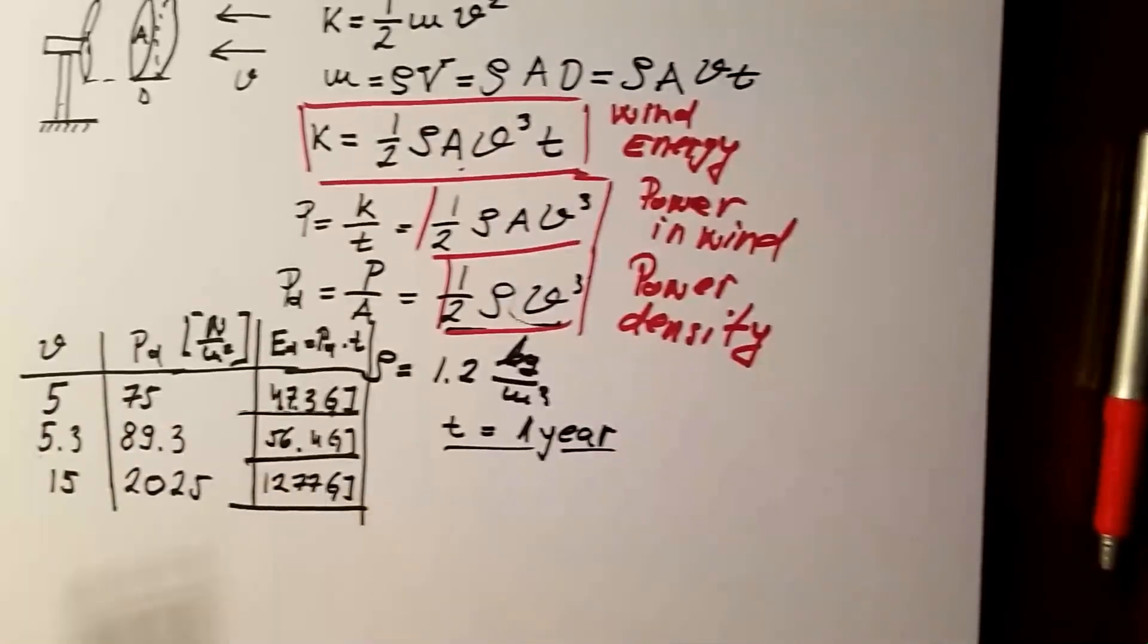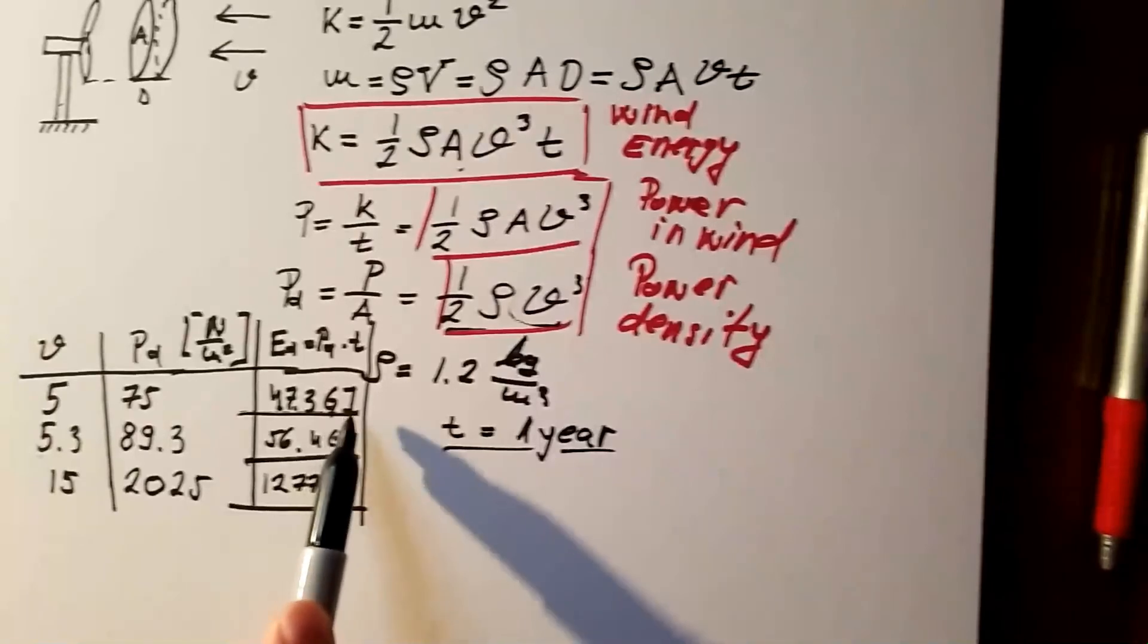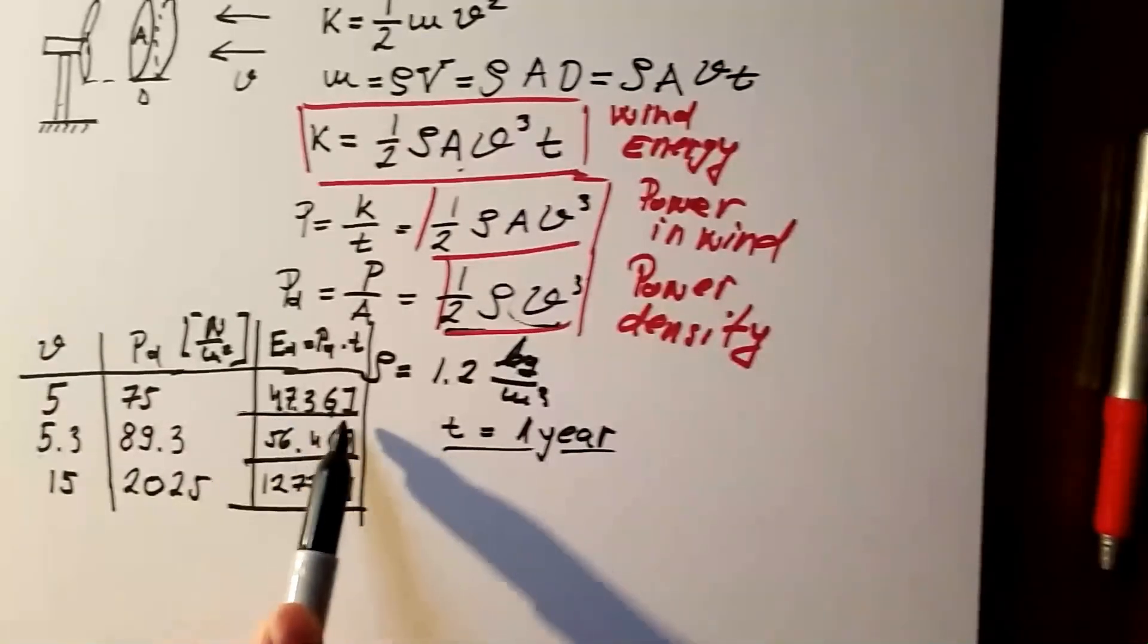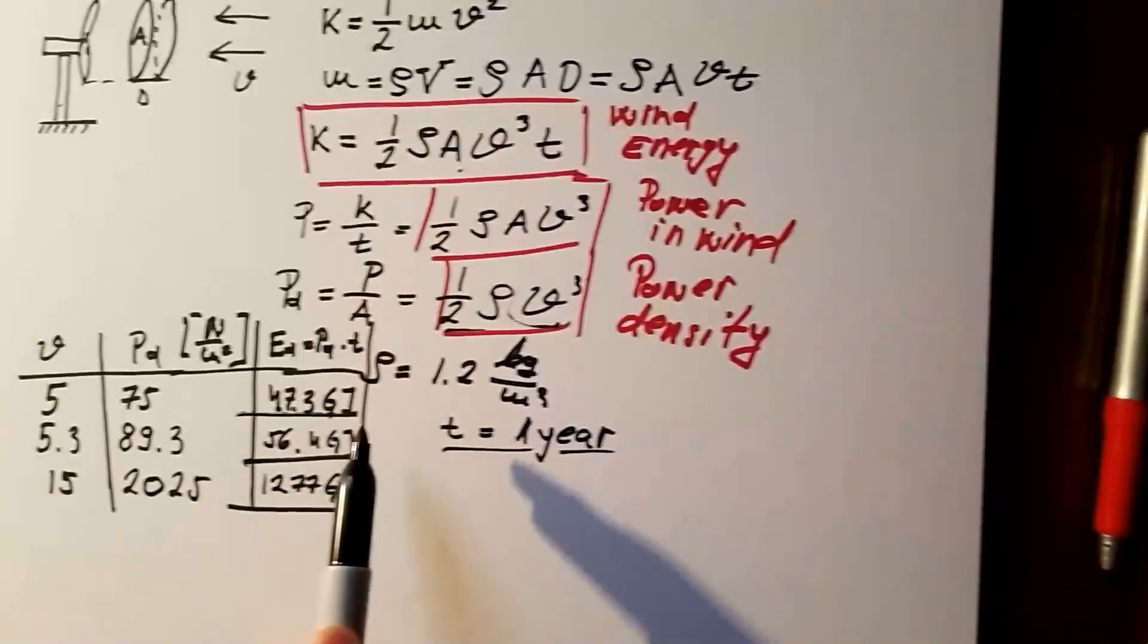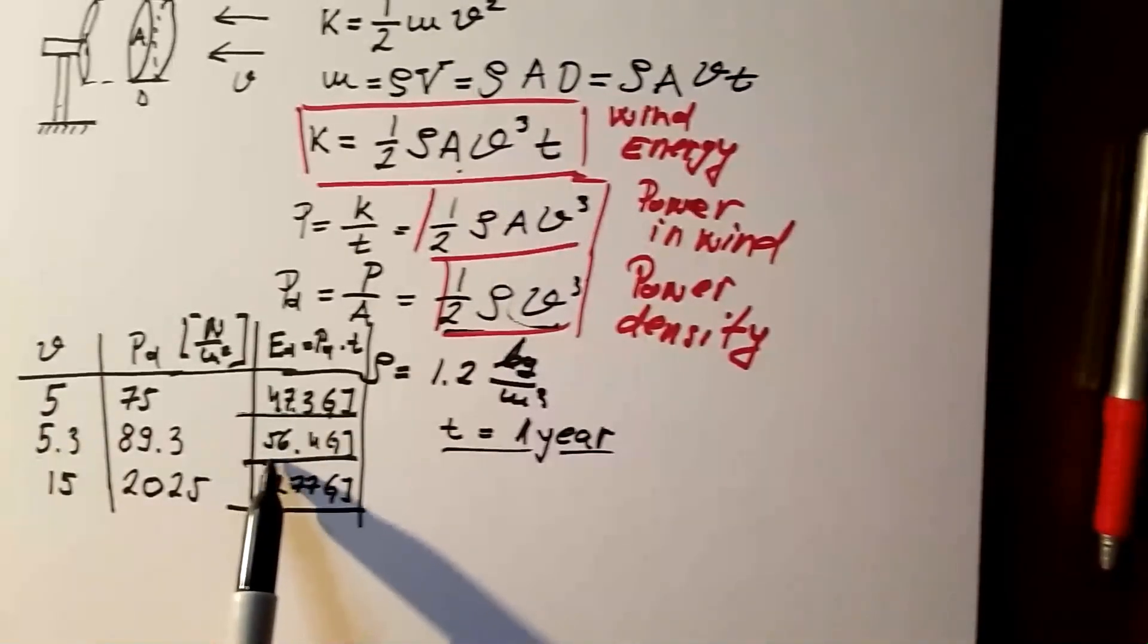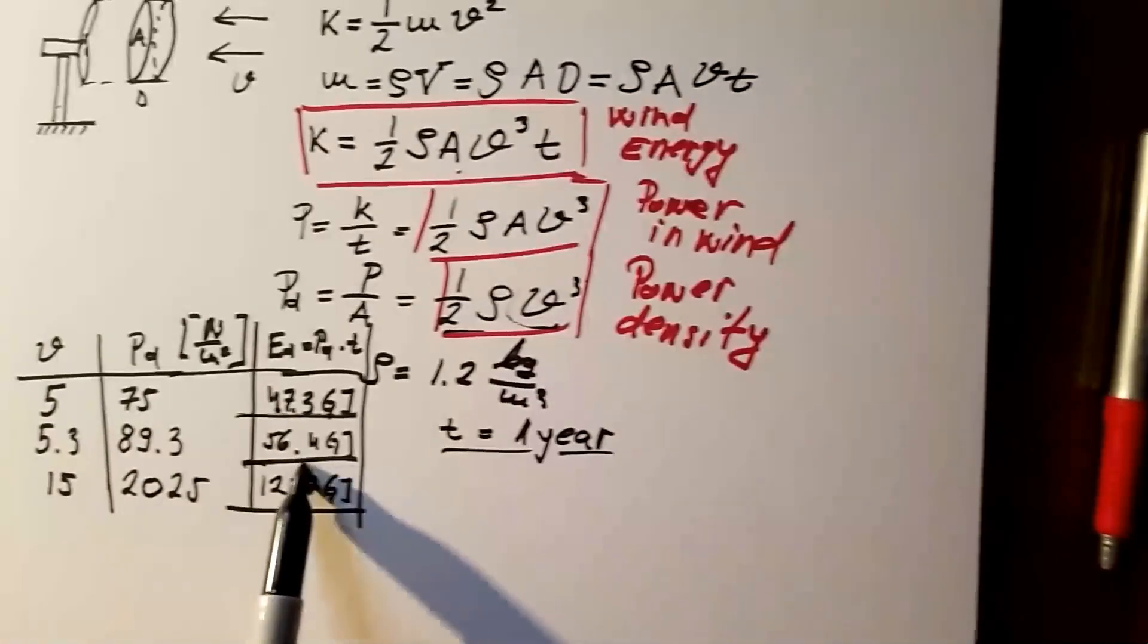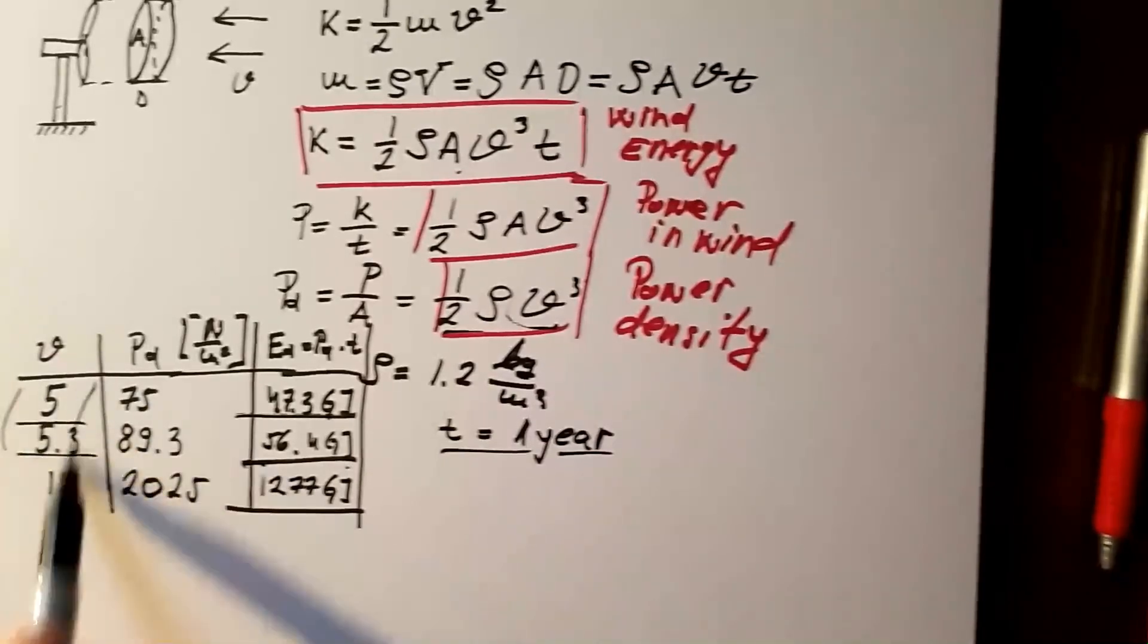If you get $1, again, just for the sake of argument, if you get $1 per joule of energy, per joule of energy you deliver to the system, electrical energy, here you would get $47.3 billion over a year, and here you would get $56.4 billion. Huge difference between these two numbers, but only slight difference in wind speed.